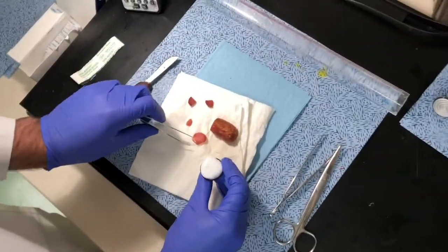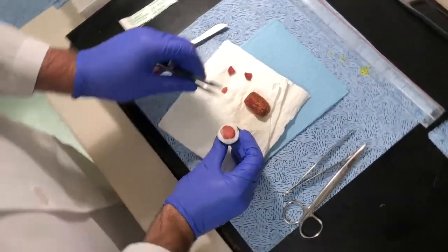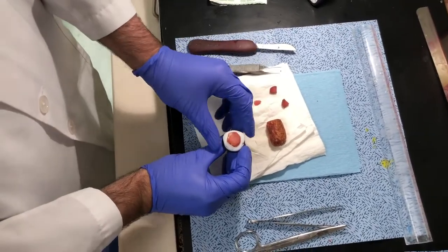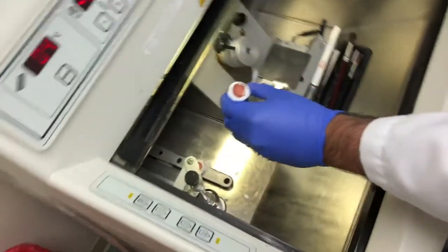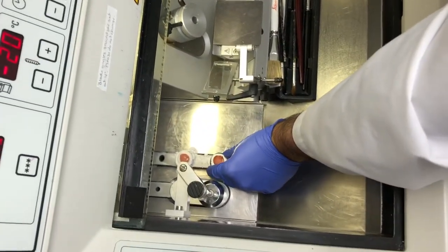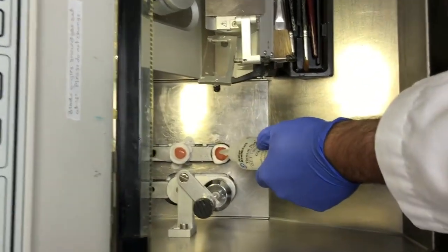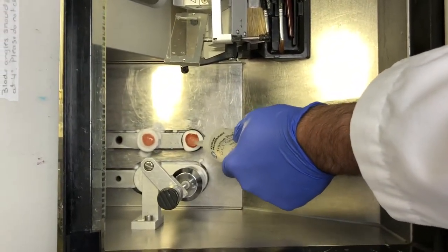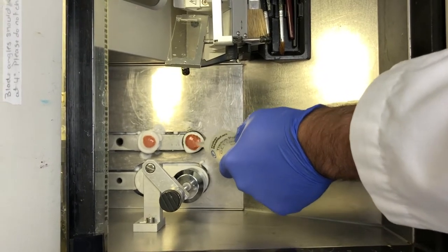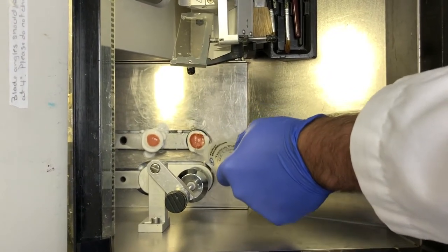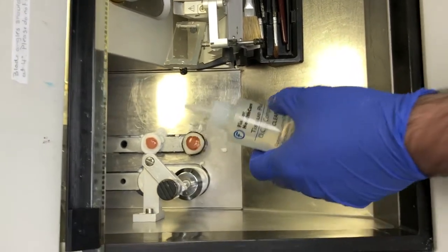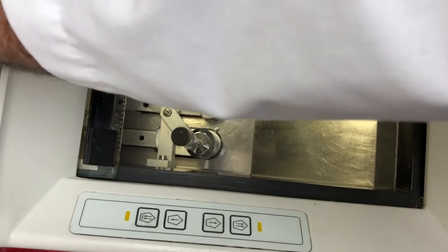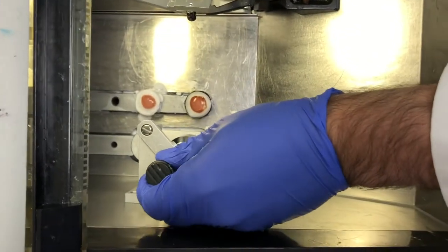Put the specimen onto the chuck. Add another layer of the OCT compound. Put the freezing block on top of the chuck to help it cool quicker.